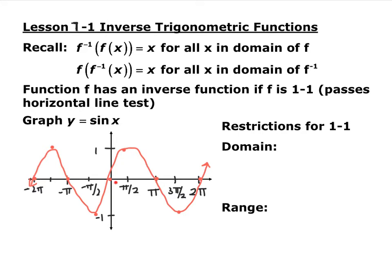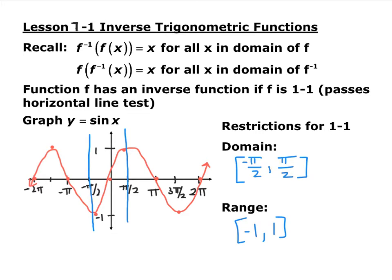Even if we restrict to between 0 and 2π — our typical period of sine — it still would not pass the horizontal line test. So in order to make sine one-to-one, we restrict its domain from negative π/2 to π/2. We're only looking at this section of the sine function, because it hits every single y-coordinate in the range of sine, which is negative one to one.